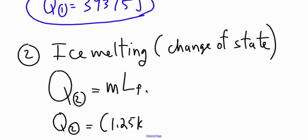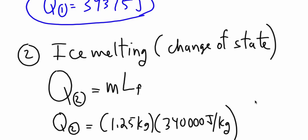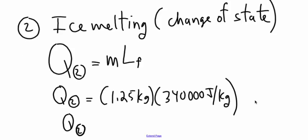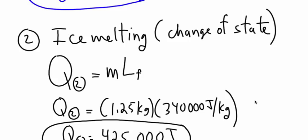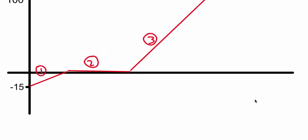Can't use MC delta T because delta T is zero. So M times LF, it's LF because this is the change of state from solid to liquid, latent heat of fusion. And the latent heat of fusion for water is 340,000 joules for every kilogram of ice that you have. So to melt the ice, 425,000 joules of energy. Now we can go back up and have a look. So we've done step one, step two.